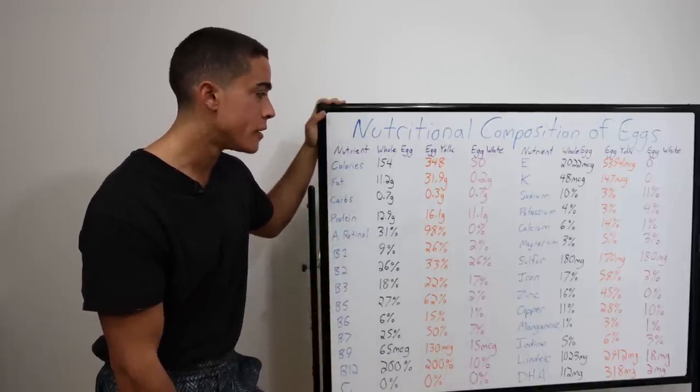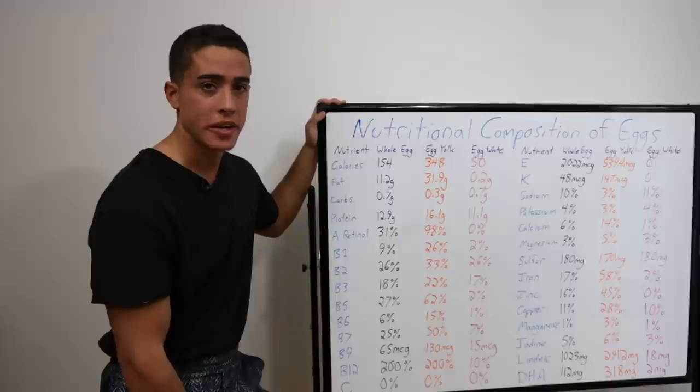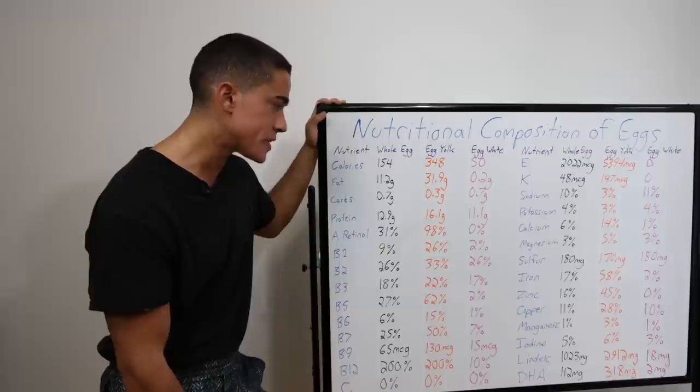Iron is pretty good in the egg yolks. So I guess some of those pale girls that faint when they get up, maybe throw some egg yolks in your diet.